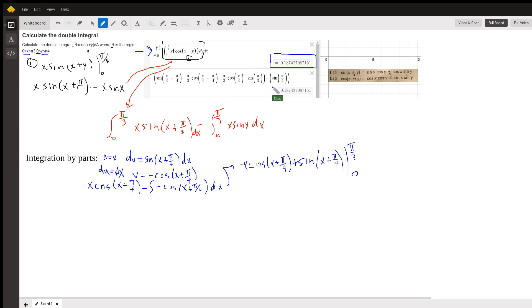On Desmos, this is the calculation for that double integral. And here is a result based on manually solving that double integral, and it appears to match. The question is, how did I do that? Well, first of all, I evaluate the inside integral with respect to y. Remember, x is a constant in that case.